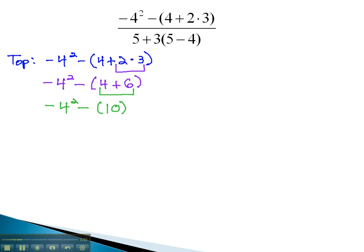After the parentheses have been simplified, we're ready to simplify the exponents. Notice the squared, the exponent is only on the 4, not the negative sign. Keep the negative sign, and square the 4, giving us the opposite of 16, minus 10.